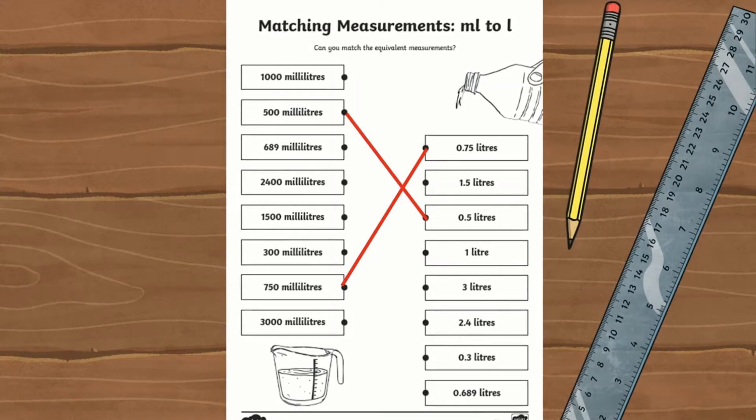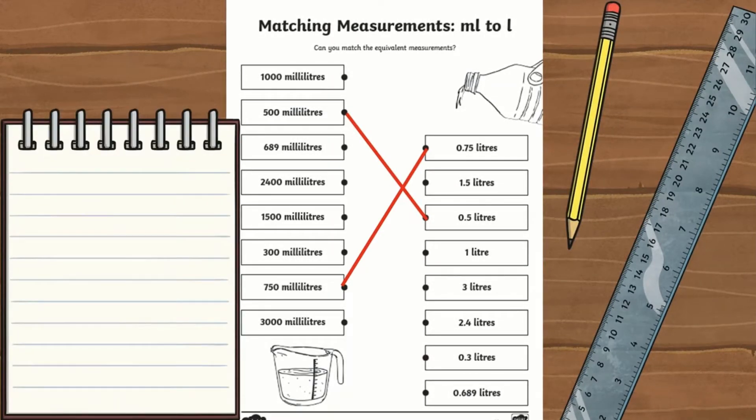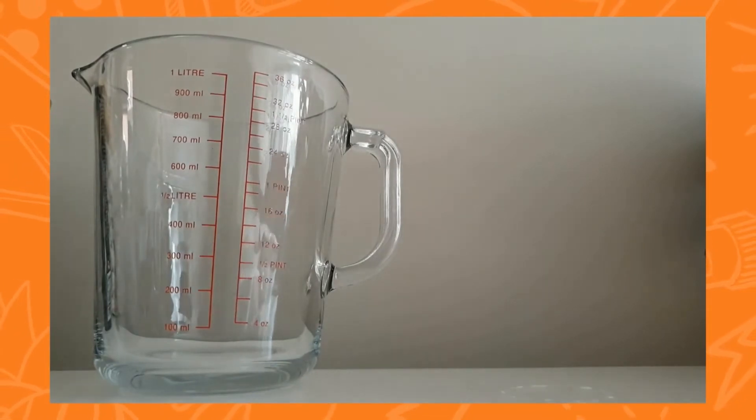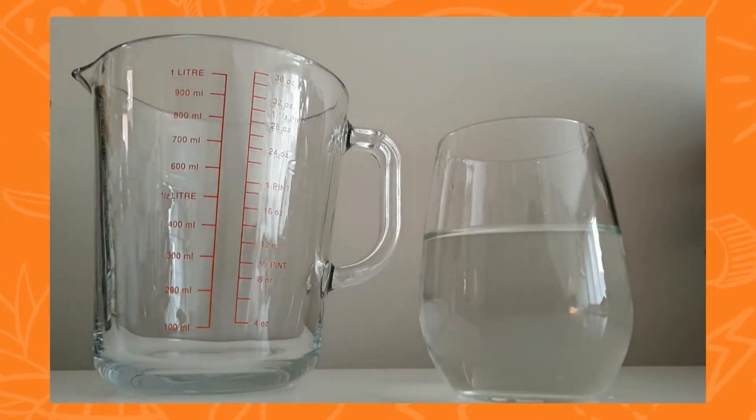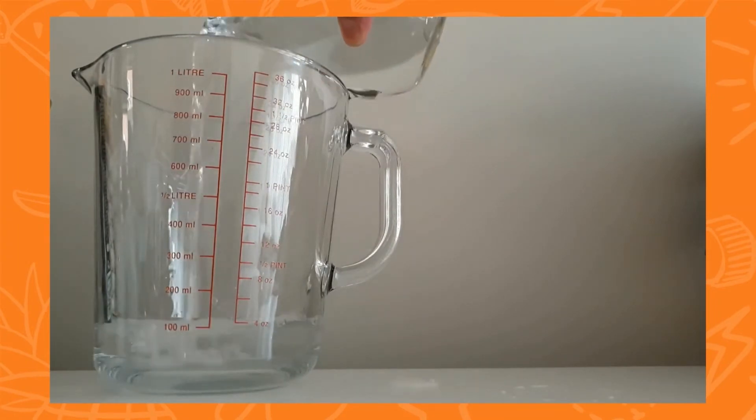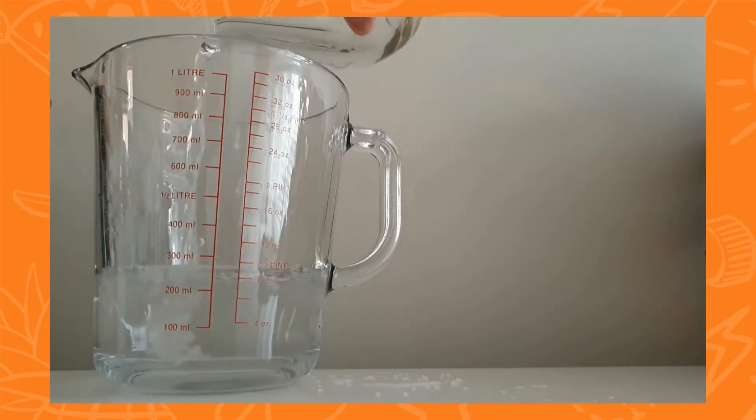You can encourage your children to simply match the equivalents, or encourage them to note down a calculation using a written method. You could also provide concrete materials such as a jug and water, and encourage your children to measure milliliters or liters to match the equivalent measurement.